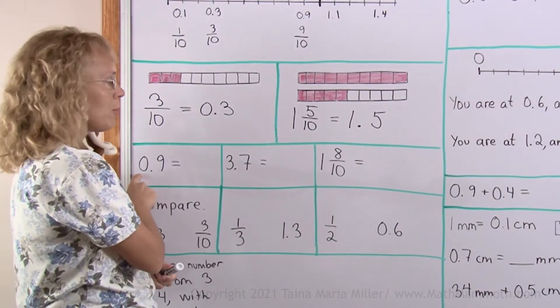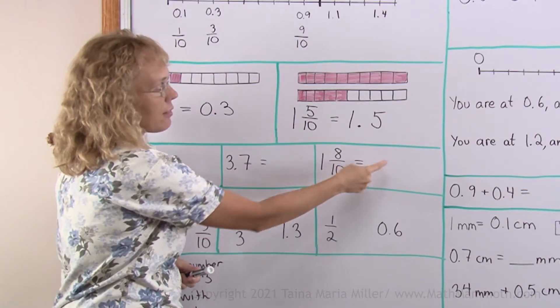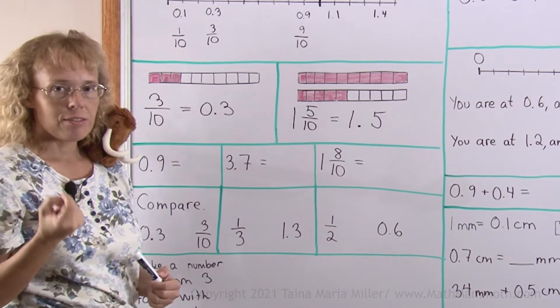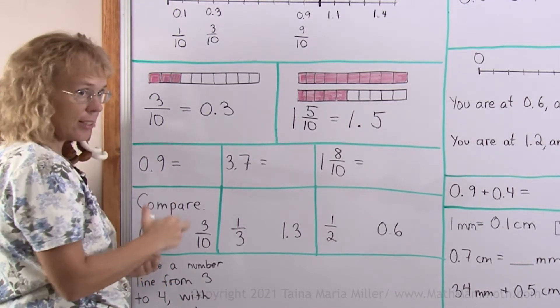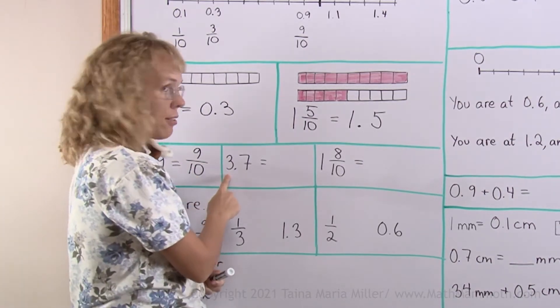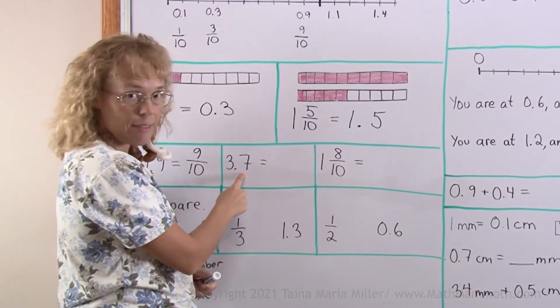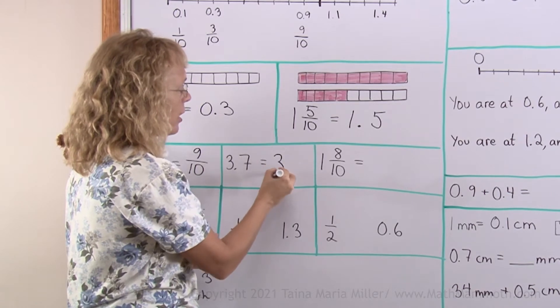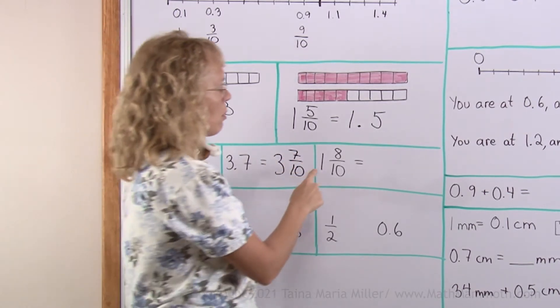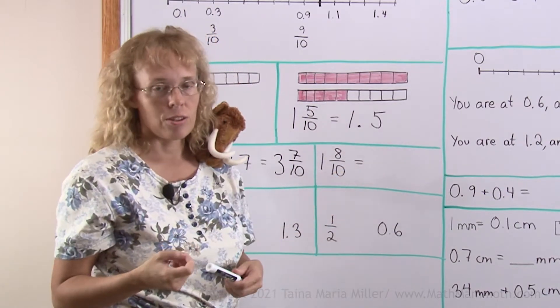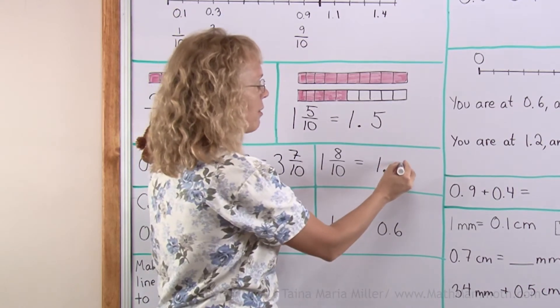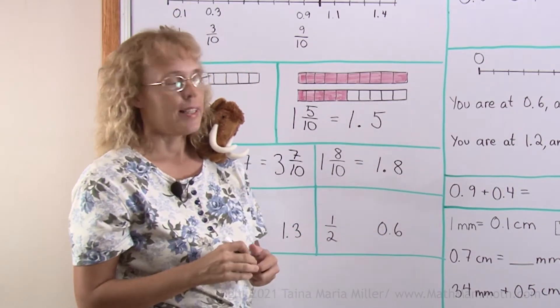Let's now change either from a decimal to a fraction or vice versa. This is a decimal 0.9 and we can read it as 9 tenths. As a fraction we write 9/10. This has 3 and 7/10. This is 1 and 8/10 as a fraction or mixed number. As a decimal I write 1.8.